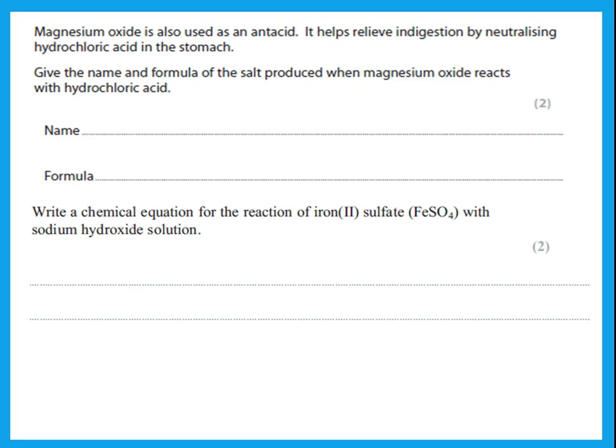Magnesium oxide is also used as an antacid. Give the name and formula of the salt produced when magnesium oxide reacts with hydrochloric acid. When magnesium oxide reacts with hydrochloric acid, the product is magnesium chloride — MgCl2. Magnesium is in group 2, so it has a valency of 2 and you put the 2 under the Cl. Cl is in group 7, valency 1, so nothing goes under the magnesium.